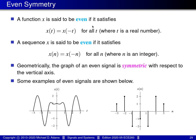A function x is said to be even if it satisfies a condition of this form. This condition is saying that for every real value of t, it doesn't matter if I evaluate the function x at plus t or at minus t — I obtain the same result either way. Similarly, a sequence x is said to be even if it satisfies a condition of this form, where for every integer value of n, it doesn't matter whether I evaluate the sequence at plus n or at minus n — I obtain the same result either way.